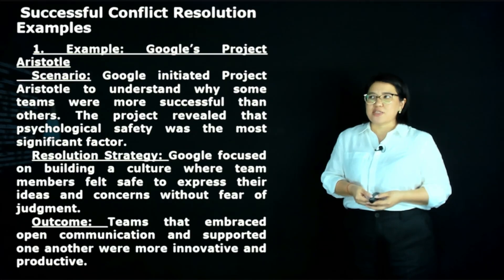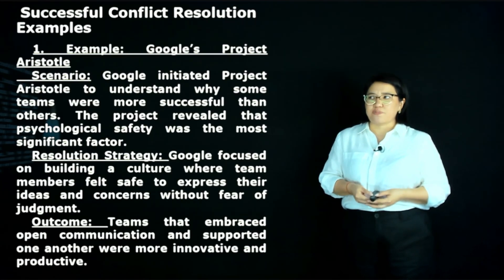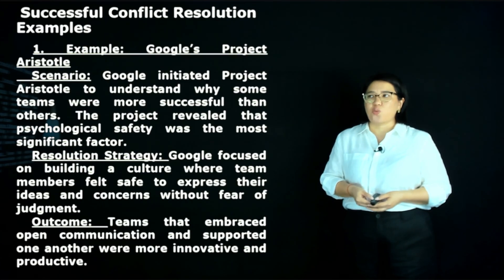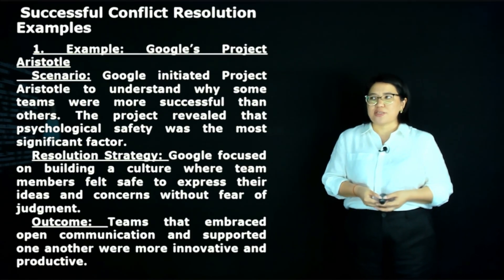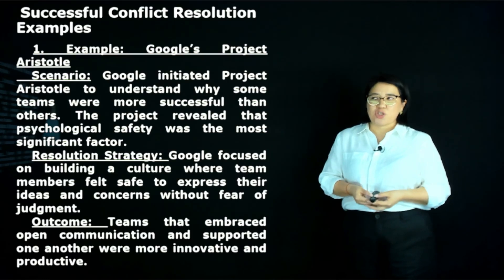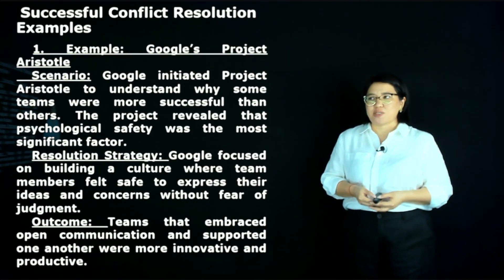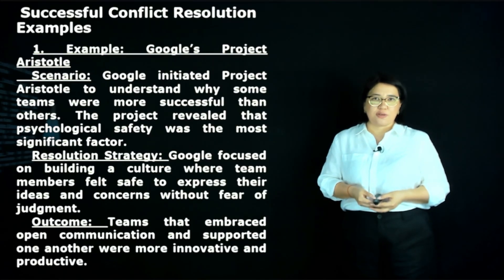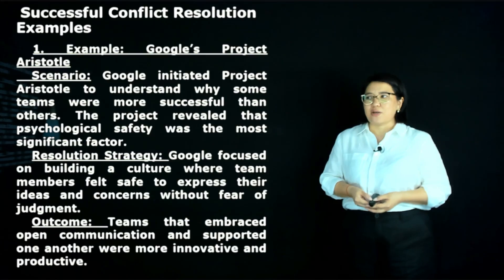A successful conflict resolution example is Google's Project Aristotle. Google initiated this project to understand why some teams were more successful than others. The project revealed that psychological safety was the most significant factor. Google focused on building a culture where team members felt safe to express ideas and concerns without fear of judgment, resulting in teams that were more innovative and productive.